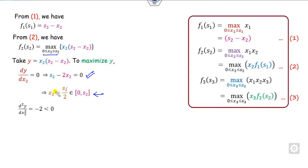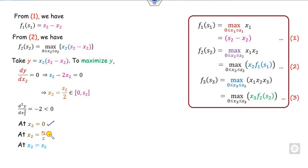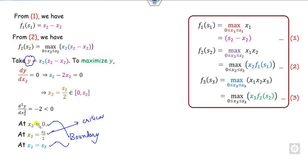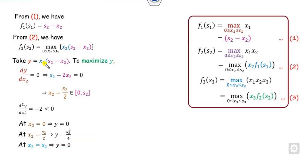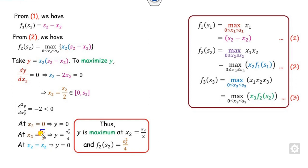After simplifying, we get that x2 equals s2/2, which lies in the domain. The second derivative equals minus 2, which is less than zero, confirming maximization is possible. Since the domain is a closed interval, we compute the maximum value at the boundary points (x2 = 0 and x2 = s2) and at the critical point. The maximum occurs at x2 = s2/2.